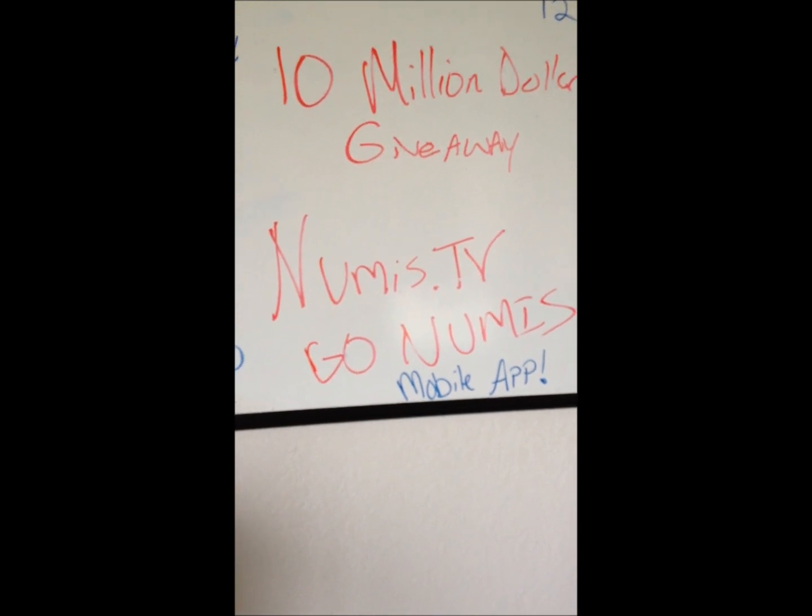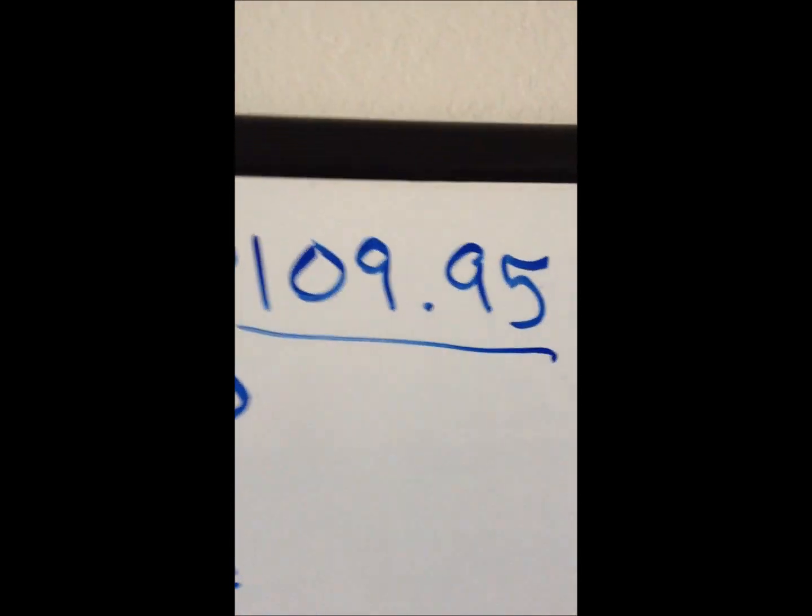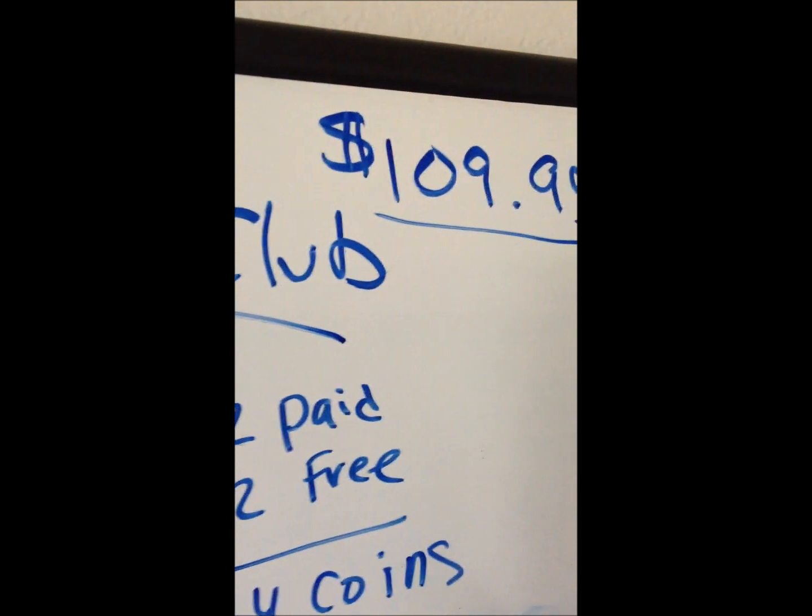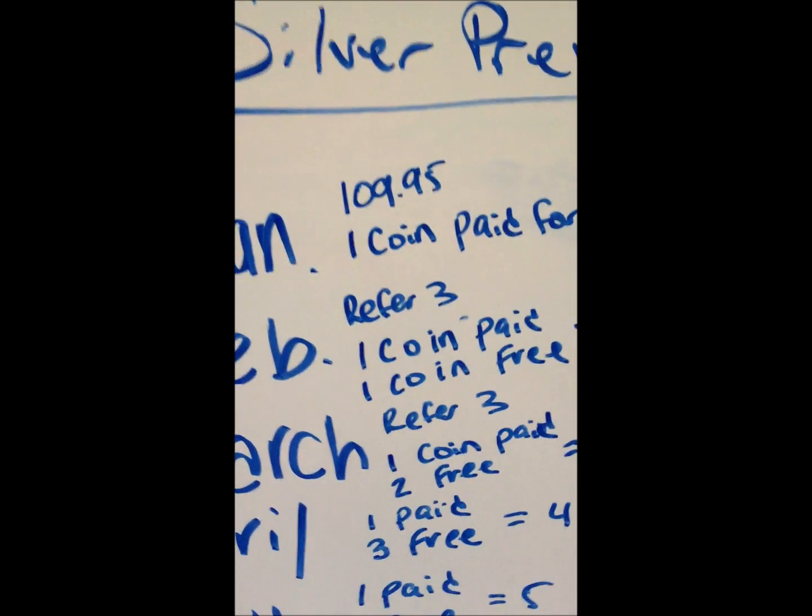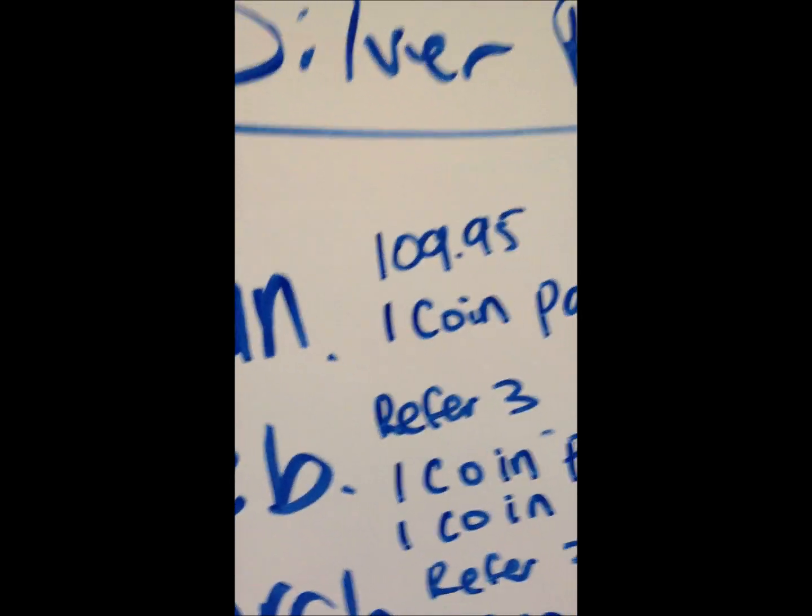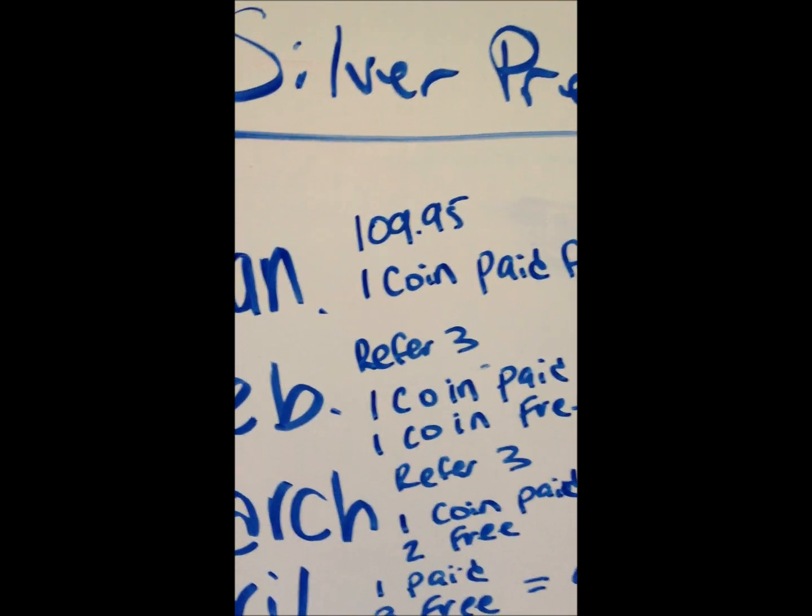All right, go Numis, Numis Nation, this is for you. $109.95 a month, you get in the biz. You join our exclusive Silver Premier Club, right? January 1st, $109.95, you pay for your coin. You get a silver certified asset, certified to be like flawless. You get one coin that first month.